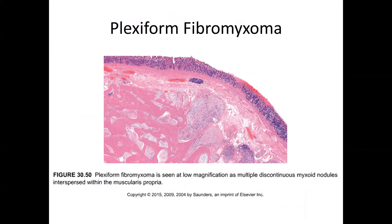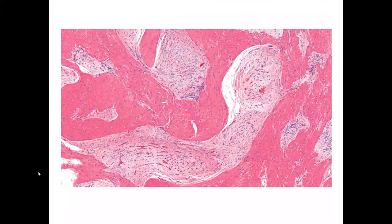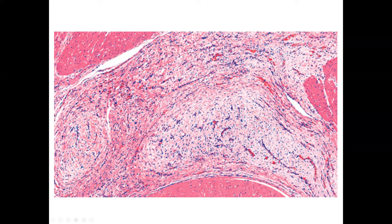Plexiform fibromyxoma is an uncommonly encountered lesion with a very descriptive name — if you see tissue that looks plexiform and is rather myxoid, you may stumble upon the diagnosis without even knowing it. The differential includes endometrial stromal sarcoma, as both tumors can have a very delicate vascular pattern. The differential would be helped by the absence of hormone receptor positivity, the sex of the patient, and potentially other markers. These tend to be more benign lesions, though their behavior can be variable.